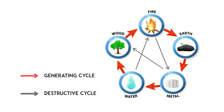Metal, in the form of a tool such as an axe, can cut through wood or trees — thus metal restrains wood. Tree roots can grow down into the earth and consume the nutrients of the soil — thus wood restrains earth. Soil can be gathered to build a dam that blocks water — thus earth restrains water.